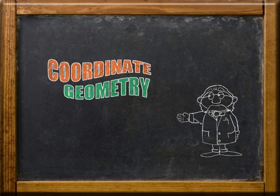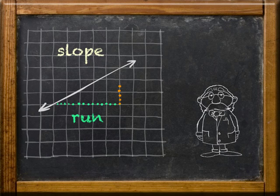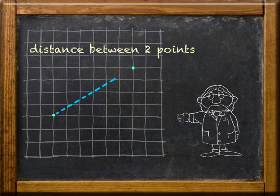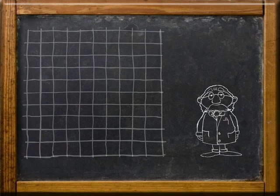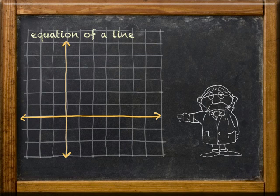Sometimes we can use coordinate geometry to check out certain properties of geometric figures. That means using the coordinate plane along with things like slope of a line, distance between two points, the midpoint of a segment, and the equation of a line.